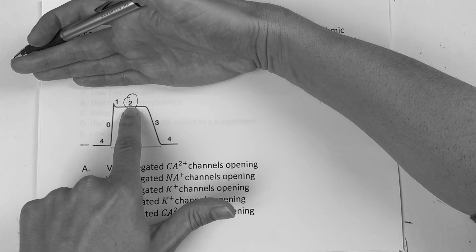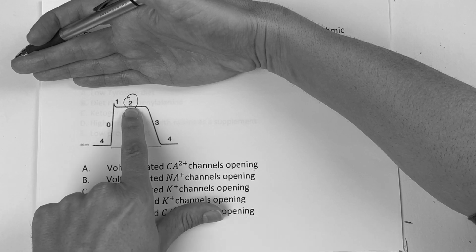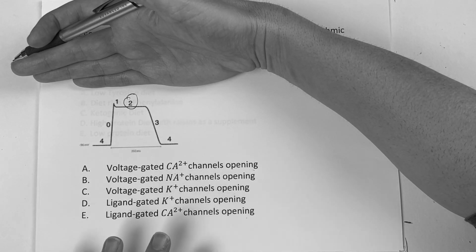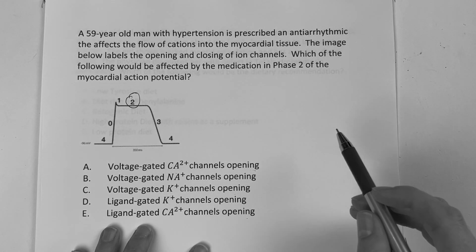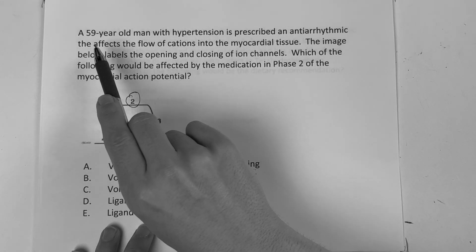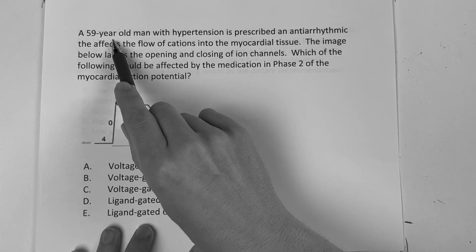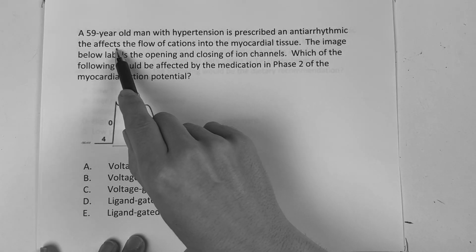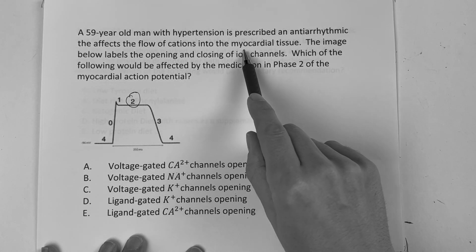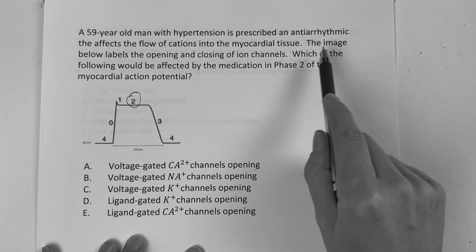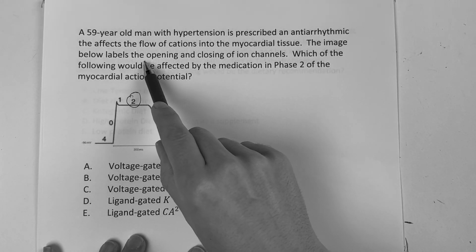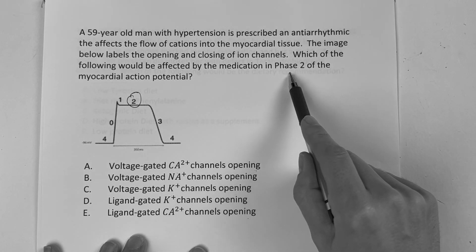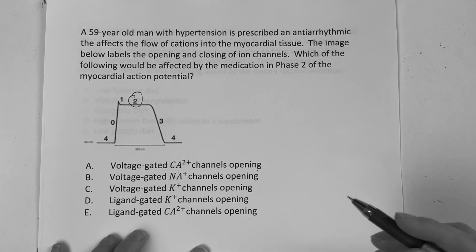Even without reading the question, if you were to see phase 2, you better be thinking about what we covered in the cardiac lectures. A 59-year-old man with hypertension is prescribed an antiarrhythmic that affects the flow of cations into the myocardial tissue. The image below labels the opening and closing of ion channels. Which of the following would be affected by the medication in phase 2?